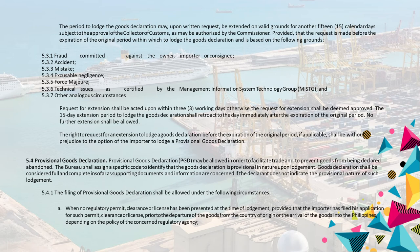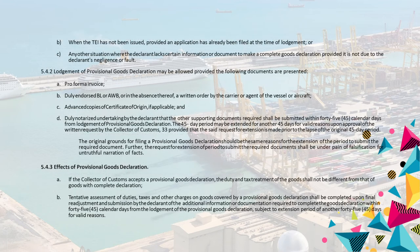5.4.1 The filing of Provisional Goods Declaration shall be allowed under the following circumstances: a. When no regulatory permit, clearance, or license has been presented at the time of lodgement, provided that the importer has filed his application for such permit, clearance, or license prior to the departure of the goods from the country of origin or the arrival of the goods into the Philippines, depending on the policy of the concerned regulatory agency. b. When the TEI has not been issued, provided an application has already been filed at the time of lodgement. c. Any other situation where the declarant lacks certain information or document to make a complete goods declaration, provided it is not due to the declarant's negligence or fault.